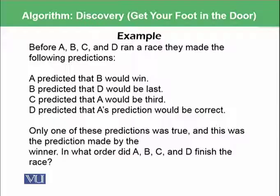Only one of these predictions was true, and this was the prediction made by the winner. So this is all of the data, all of the problem we have. And we need to identify the order: did A, B, C, D finish the race?